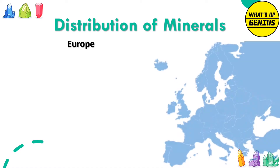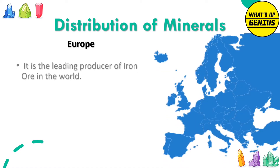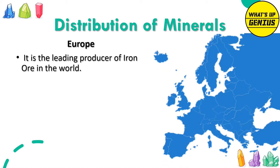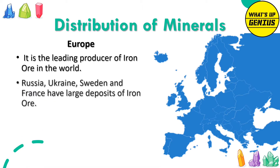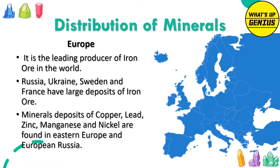Europe is the leading producer of iron ore in the world. Russia, Ukraine, Sweden and France have large deposits of iron ore. Mineral deposits of copper, lead, zinc, manganese and nickel are found in Eastern Europe and European Russia.